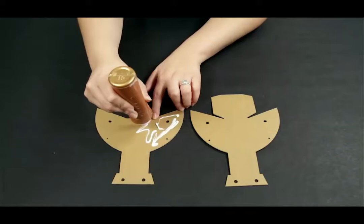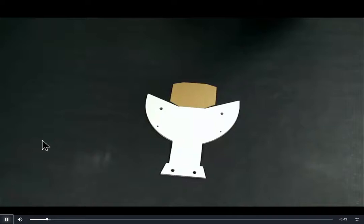Step 2: Glue part E to part F, making sure to line up the holes. Clamp or place under a heavy book.